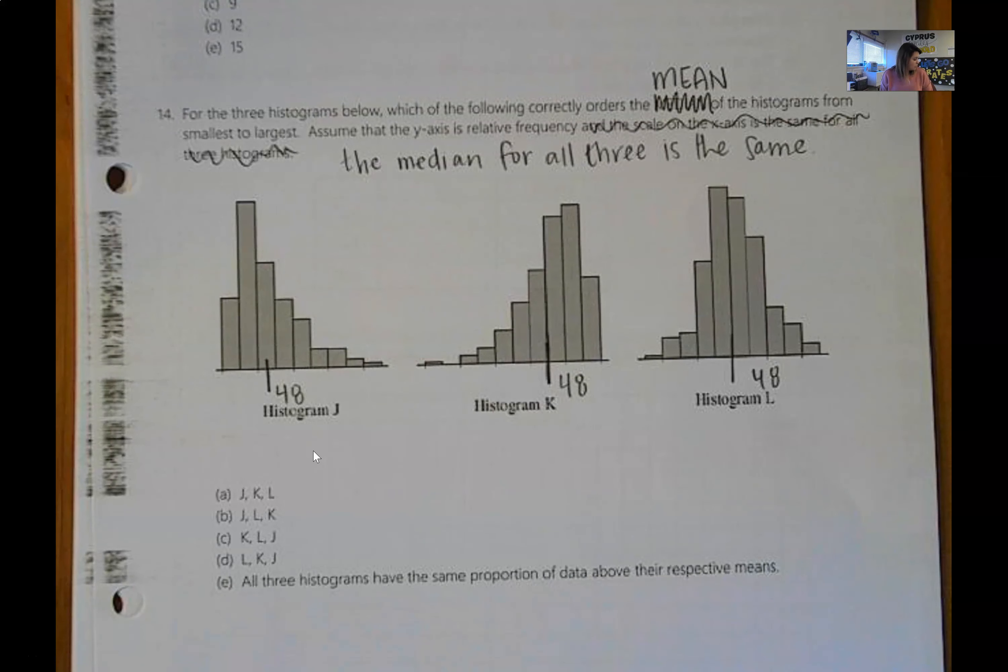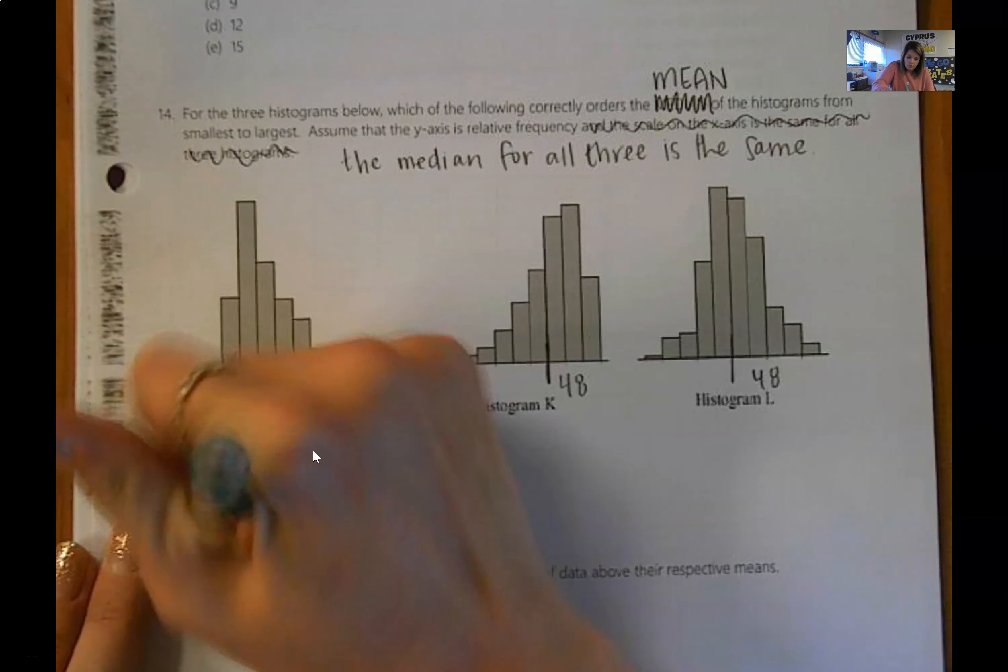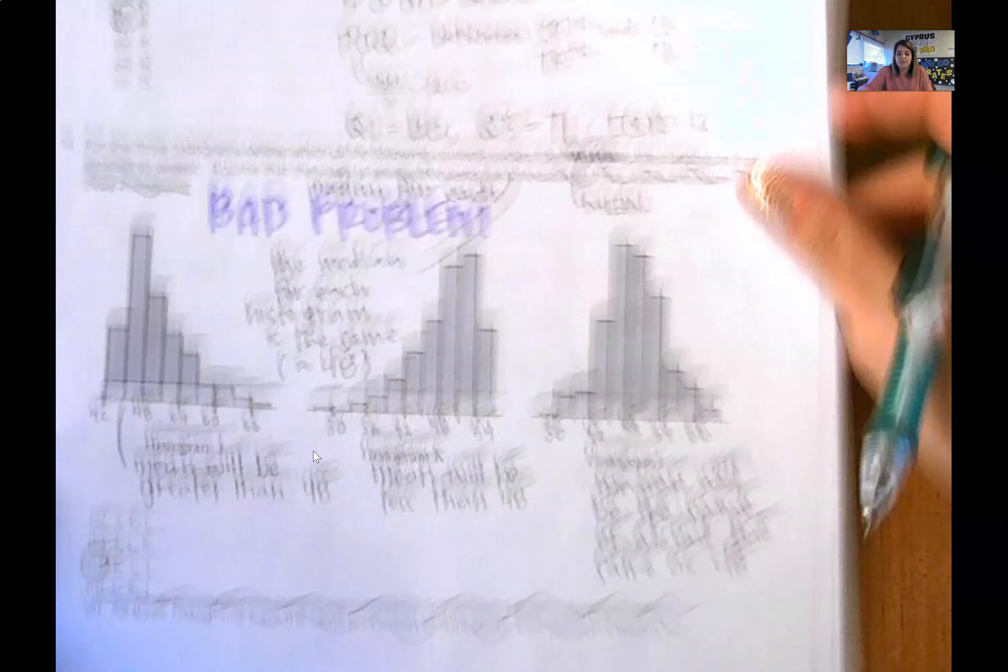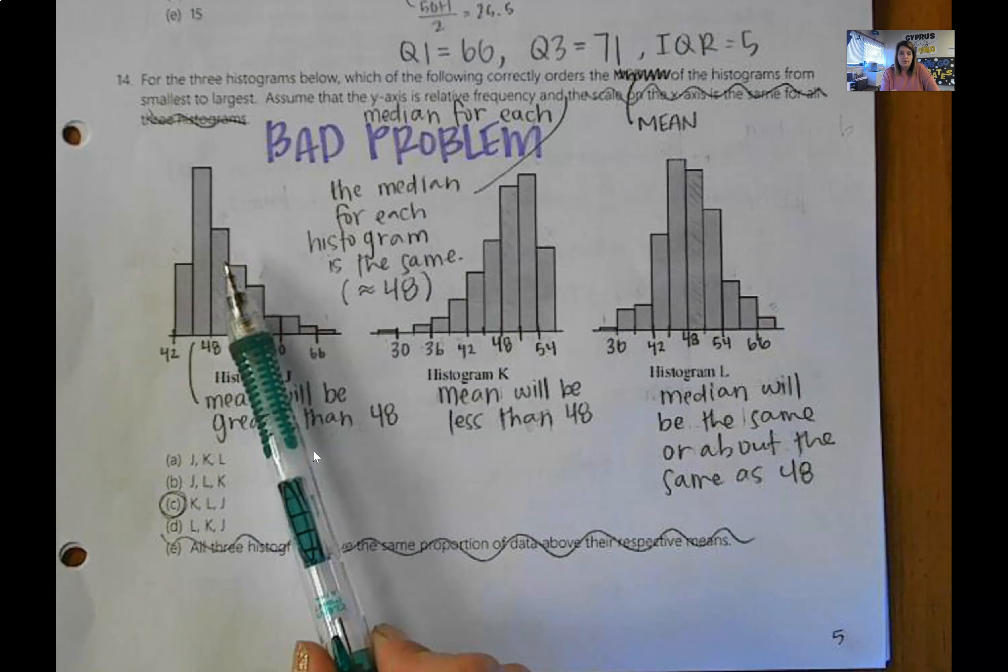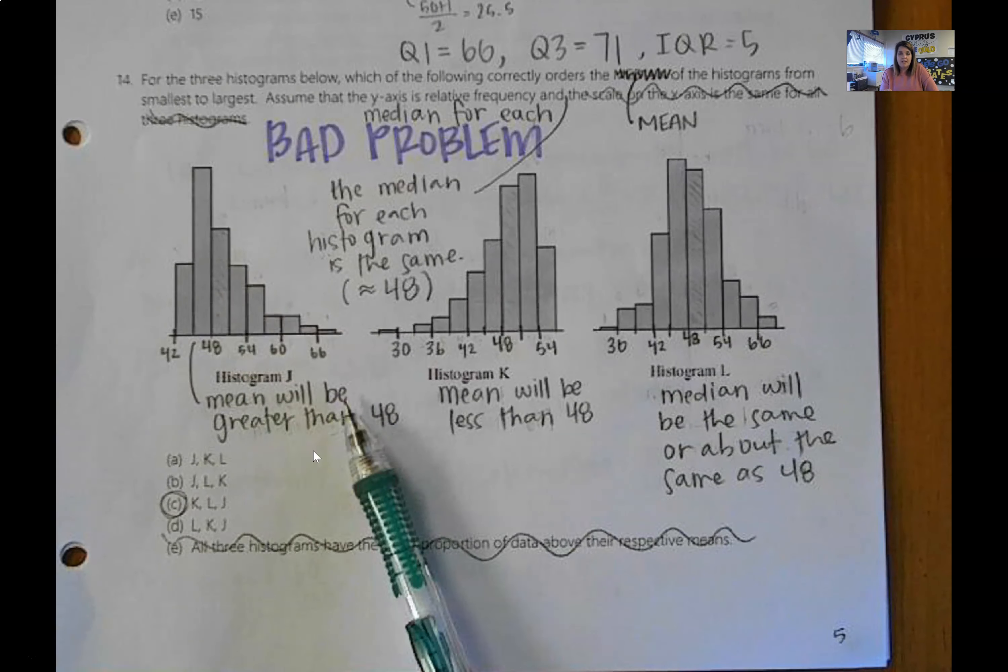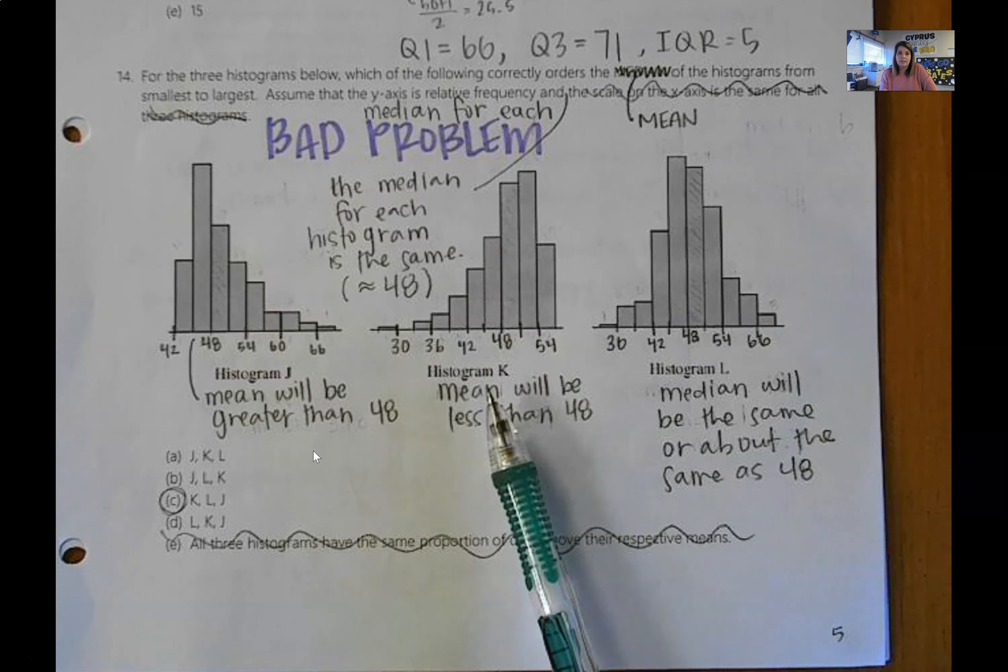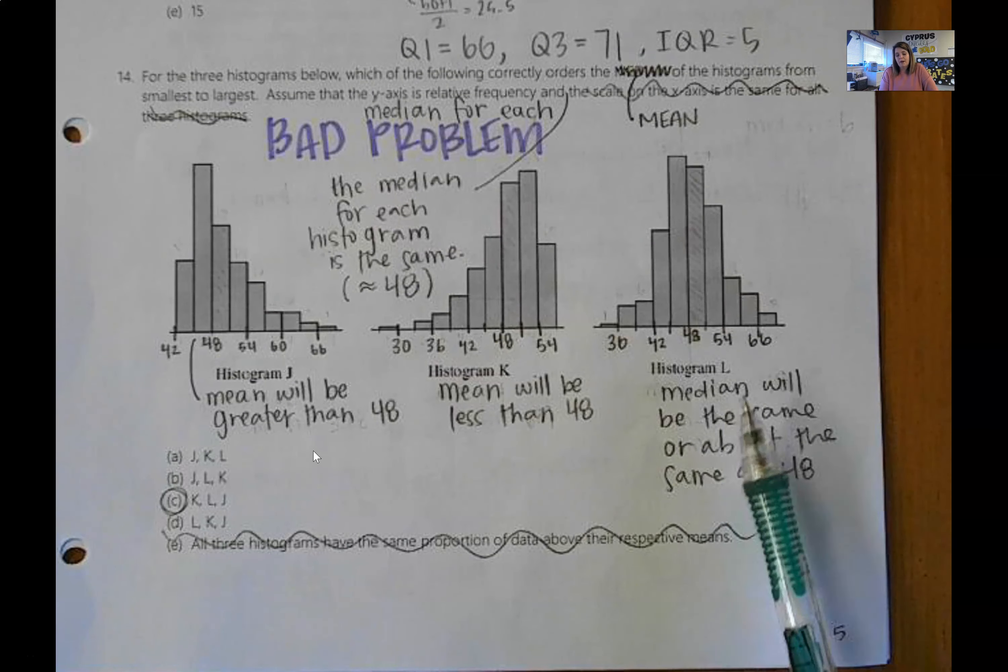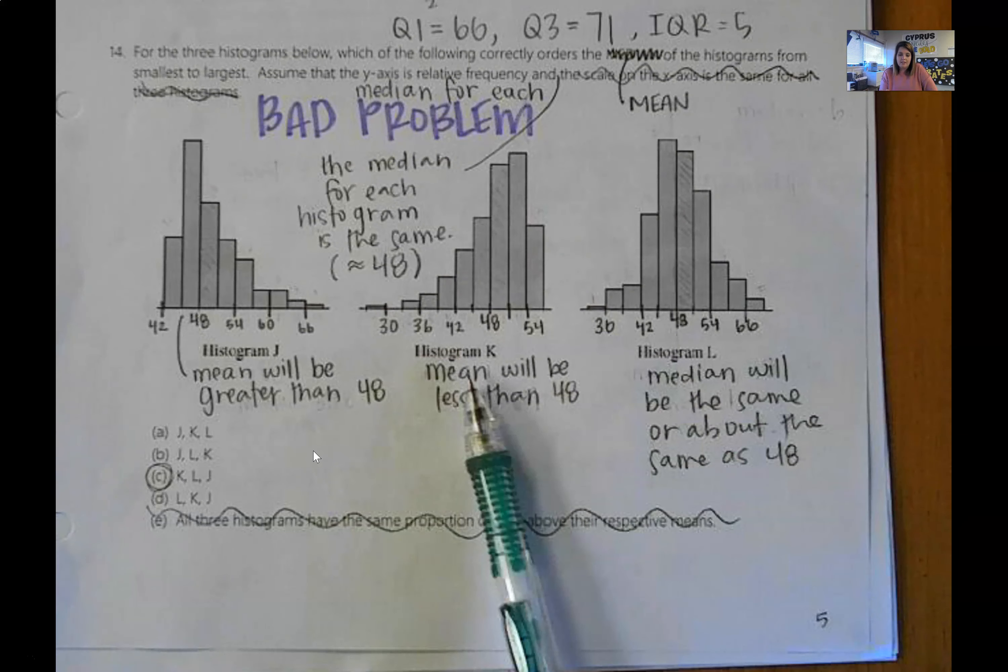All right, I'm hoping that you were able to at least come up with a guess. The answer is Charlie. So let's go through this. My key looks a lot messier than yours, but this distribution is right skewed. So that means that your mean is going to be greater than 48. This distribution is left skewed, which means that your mean is going to be less than 48. And this is roughly symmetric, so your median and your mean will be about the same. So it'll be about 48.